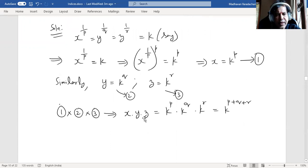Now, x, y, z is given in the question as 1. So 1 can be equated to k to the power of p plus q plus r.